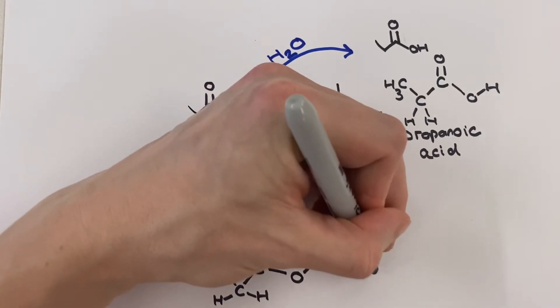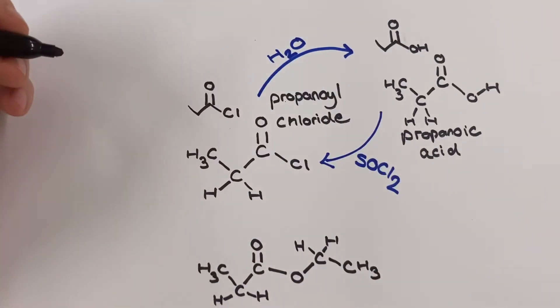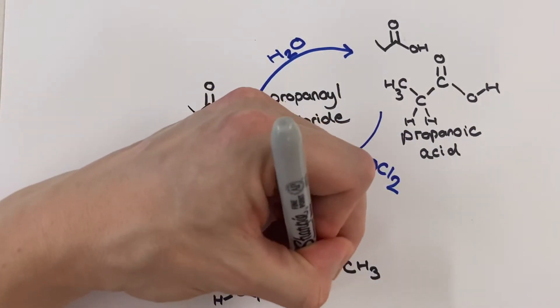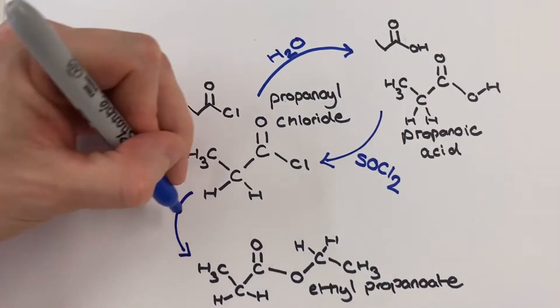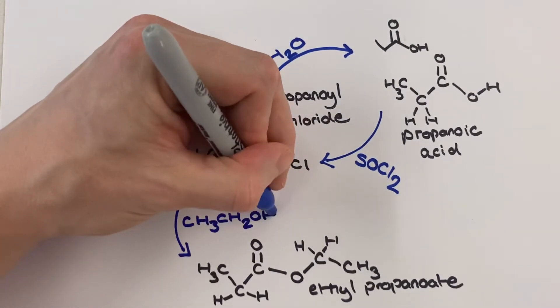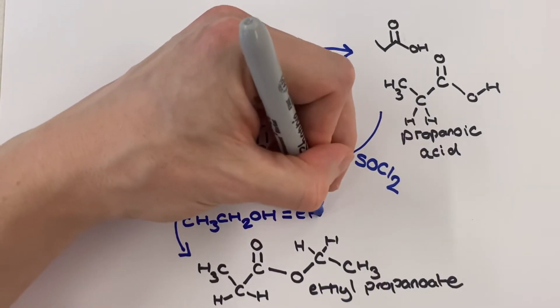Examining the structure of our ester we can see that the propanoyl chloride, our acyl chloride, has provided the side of the ester which contains the C double bond O. This reaction will also produce some hydrochloric acid.